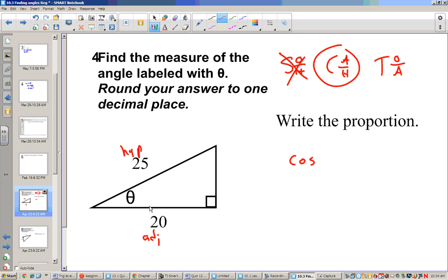We'll say the cosine of our angle is equal to our adjacent side, which is 20, over our hypotenuse, which is 25. Wonderful. Now we have our proportion.